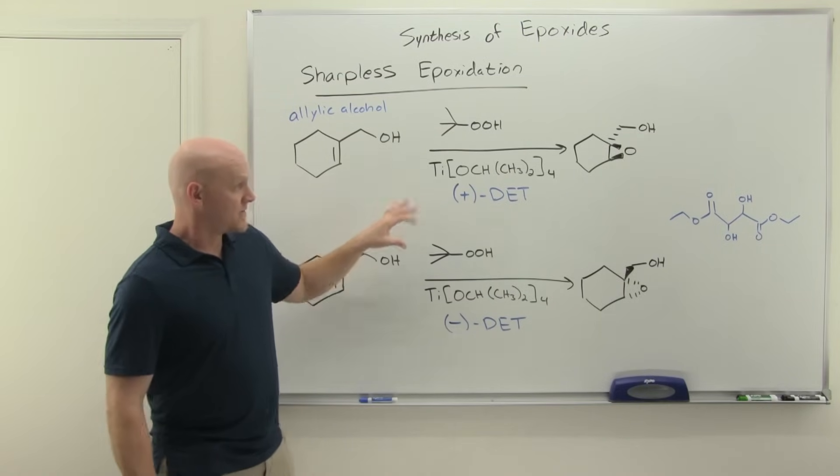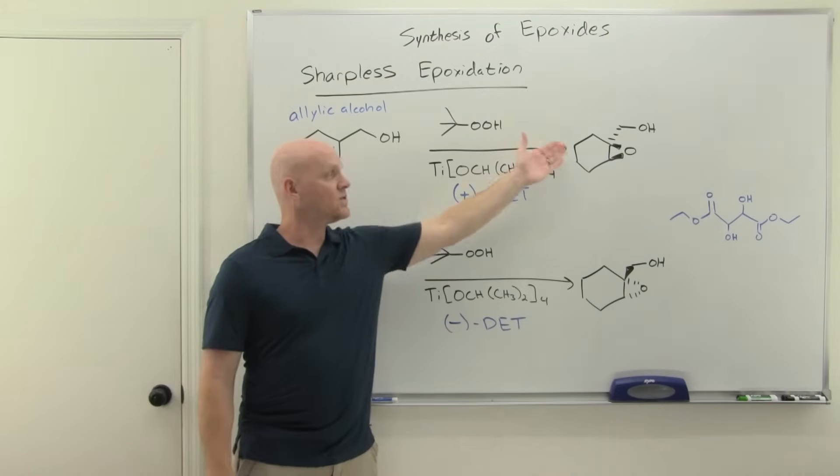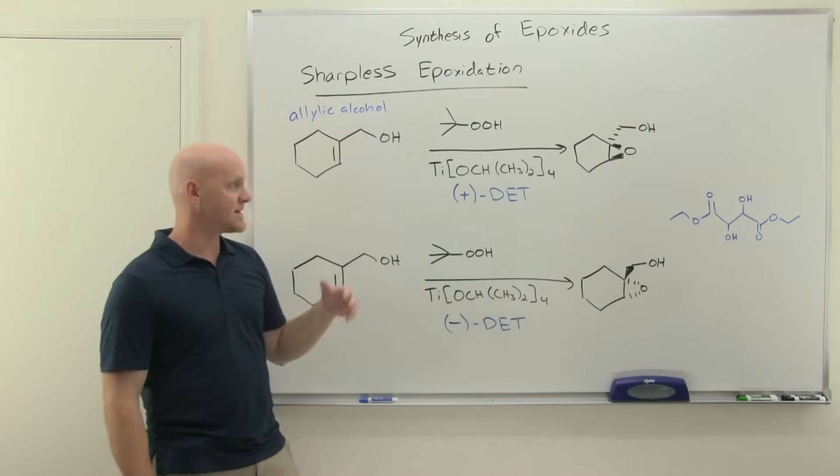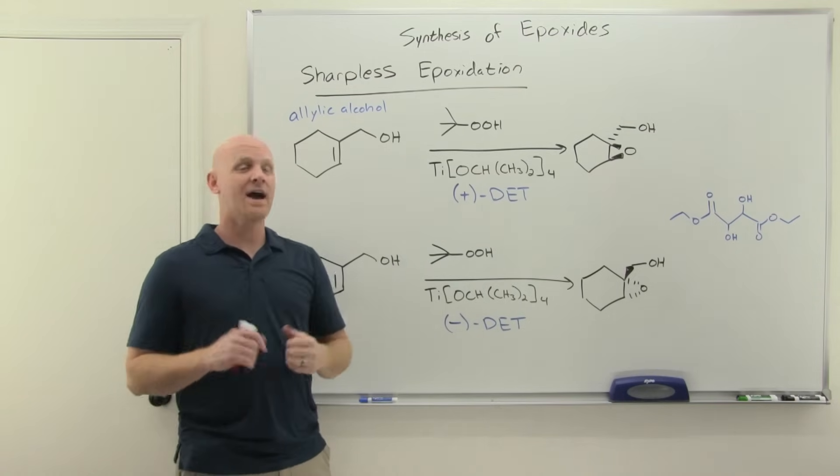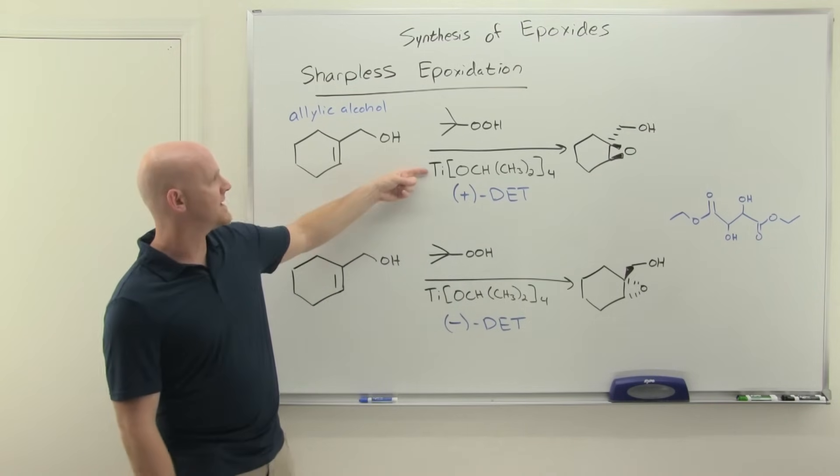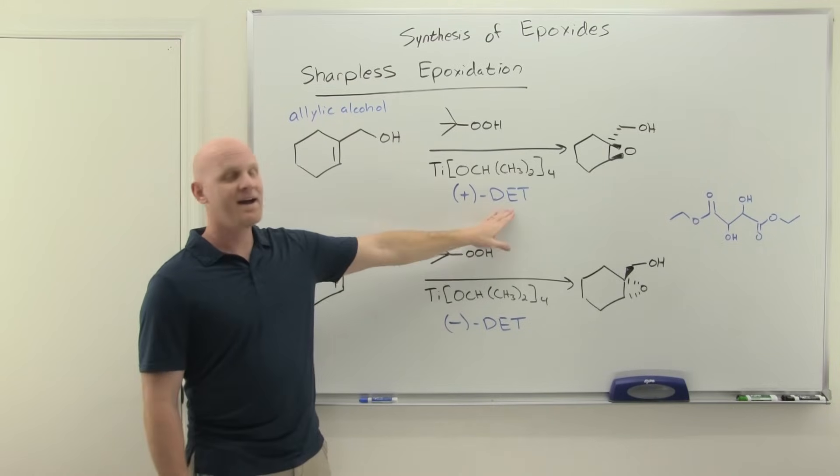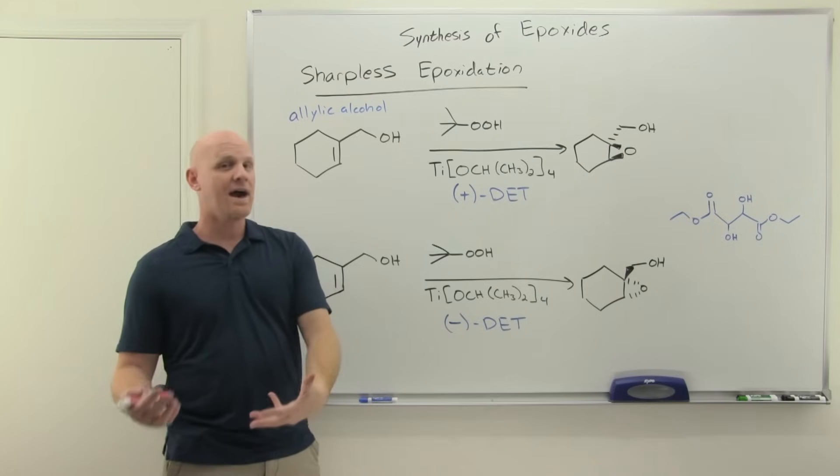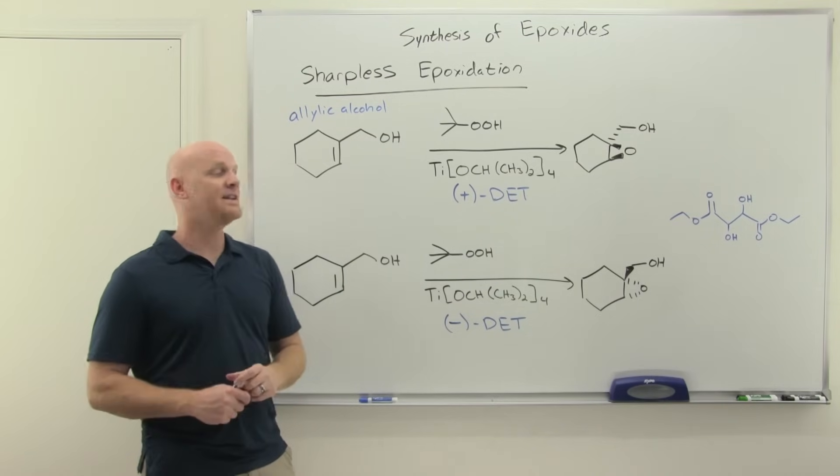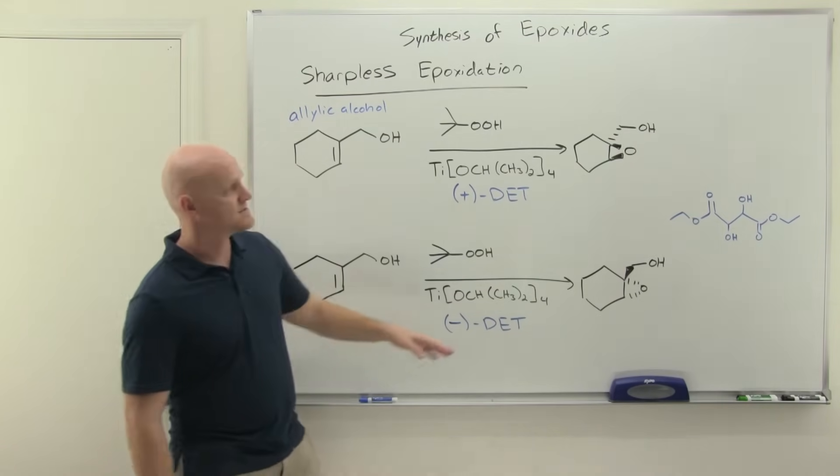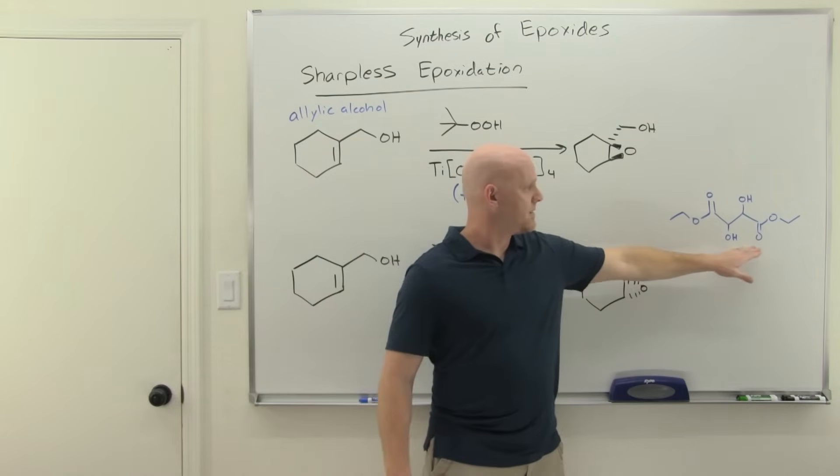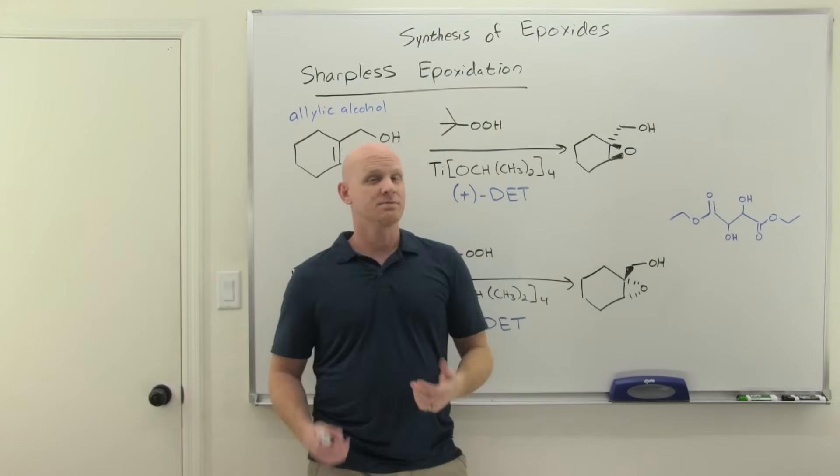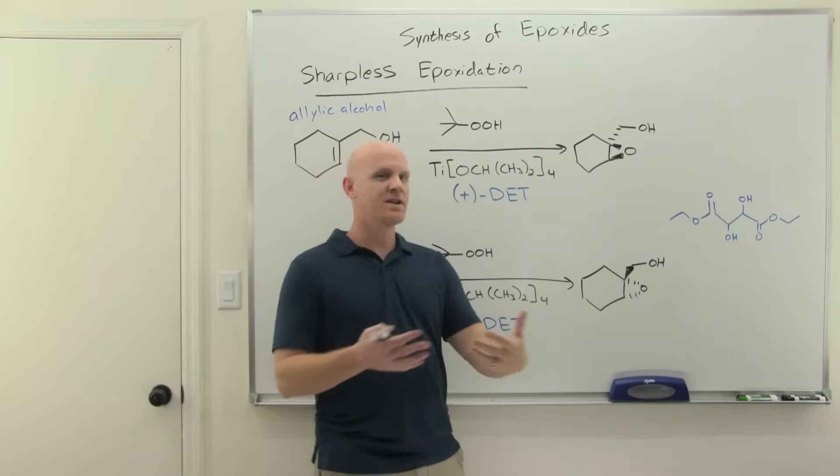And it turns out the way this works, if you want to form a single chiral enantiomer, you have to have a chiral environment. And it turns out this proceeds with a chiral catalyst. So it turns out this titanium complex with diethyl tartrate forms a chiral catalyst. And we use two different enantiomers of diethyl tartrate. This is a picture of diethyl tartrate right here. And depending on your wedges and your dashes, there's a meso version, then there's an RR version, an SS version.